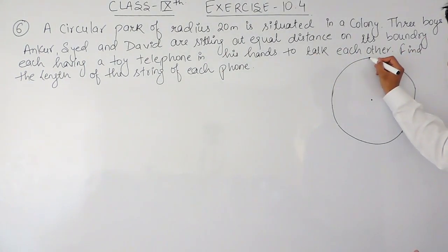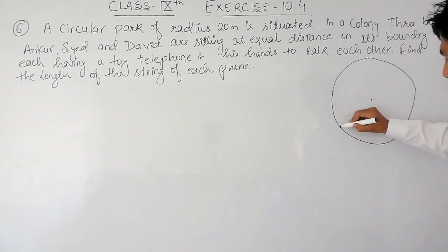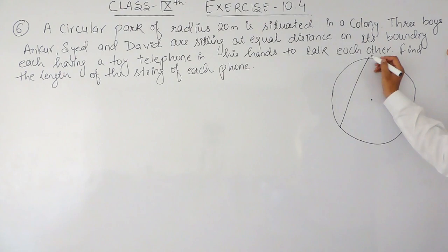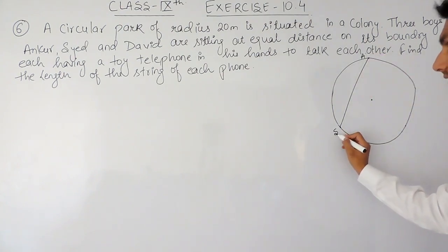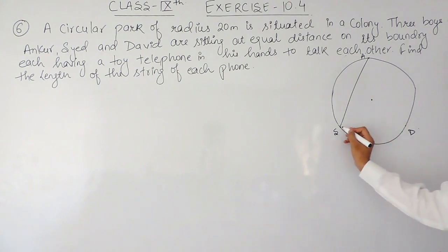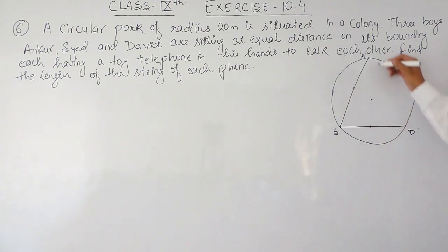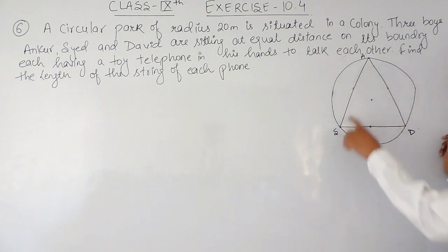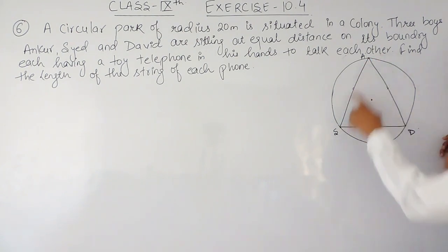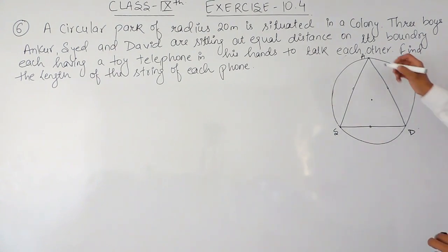There are three boys sitting at equal distance. Let's say this is Angkor, this is Syed, and this is David, sitting on the circumference of this circular path. The distance between Angkor and Syed, David and Syed, and Angkor and David is the same. If I join these three points I will get a triangle, and because all three sides of this triangle are equal, this is an equilateral triangle.